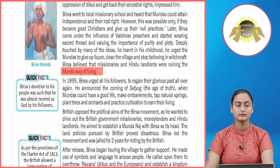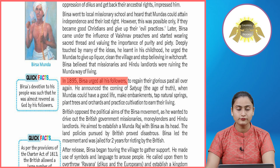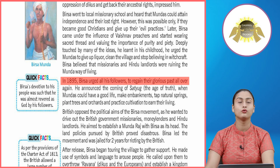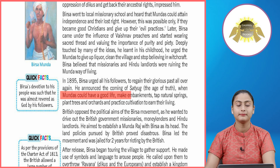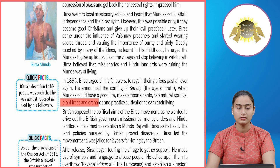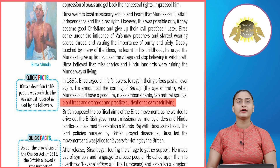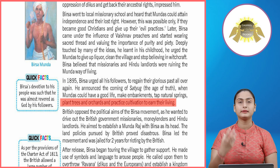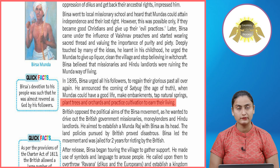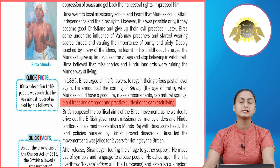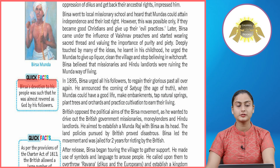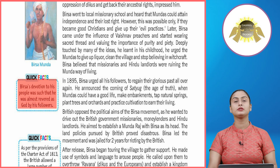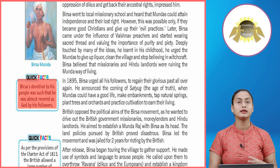In 1895, Birsa urged all his followers to regain their glorious past. He announced the coming of Satiyug — the age of truth — when Mundas could have a good life, make embankments, tap natural springs, plant trees and orchards, and practice cultivation to earn their living. Quick facts: Birsa's devotion to his people was such that he was almost revered as god by his followers.